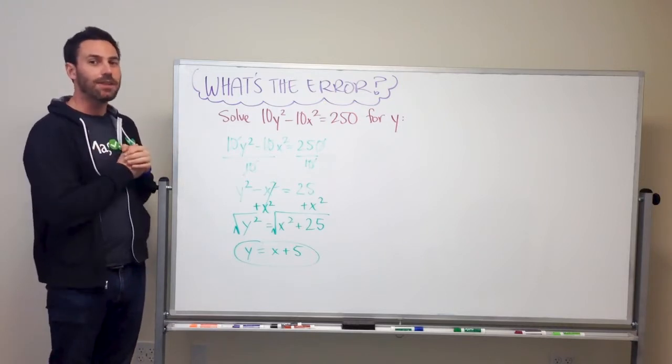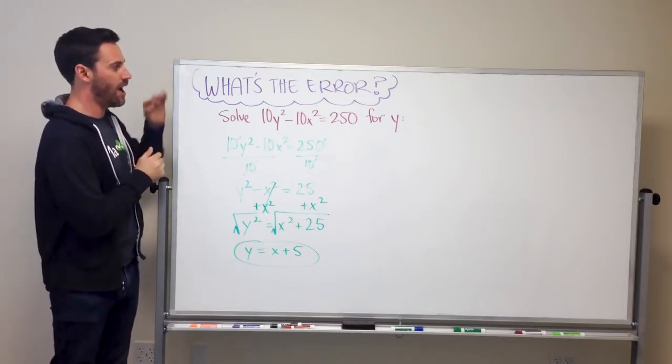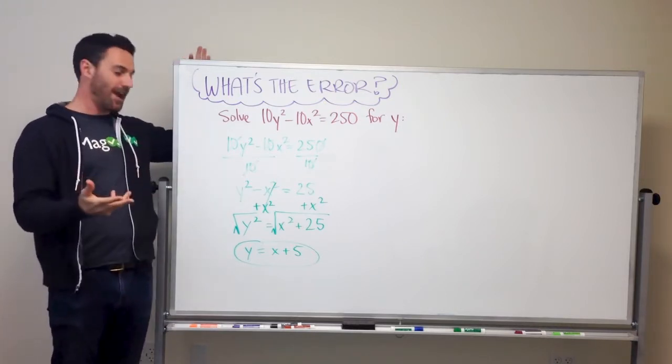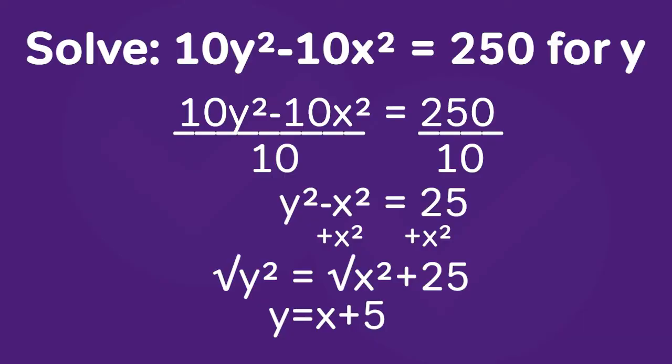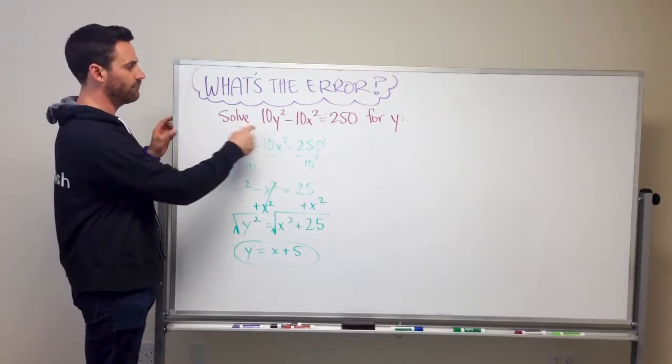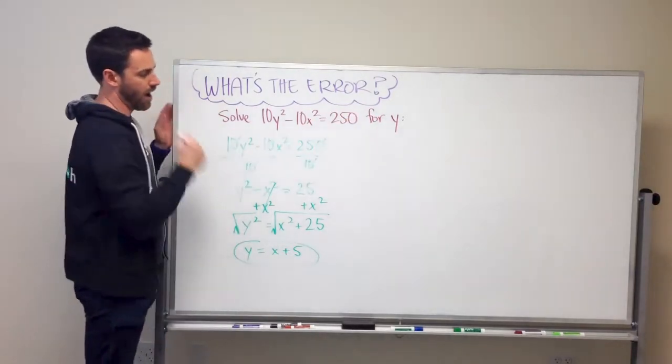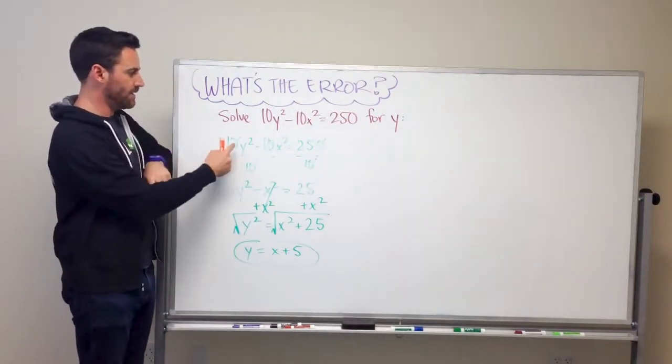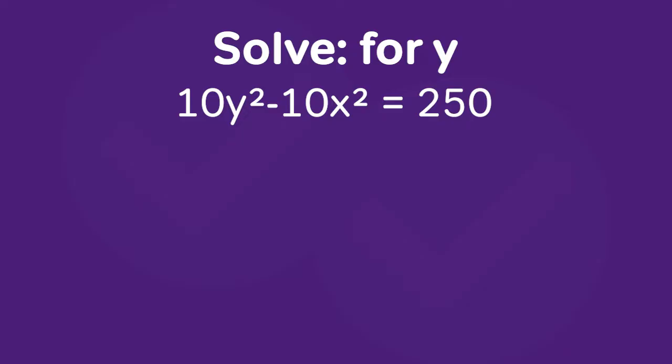So that's where we're starting with, with the mistake. As you can see, the question is what's the error? I wrote this problem on the board and some student solved the problem. They thought that they got it right but they got it wrong actually. So the question says solve this equation for y. The equation is 10y² - 10x² = 250.